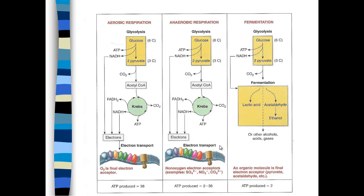With the ability for organisms to breathe things other than oxygen, we need to account for anaerobic metabolism. Looking at aerobic respiration, anaerobic respiration, and fermentation in the complete absence of an electron acceptor: glycolysis basically functions the same in all three. You start out with one glucose and get two pyruvates. Glucose has six carbons, pyruvate has three carbons. Both produce ATP and NADH.